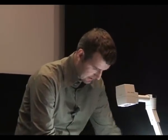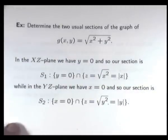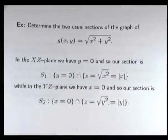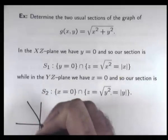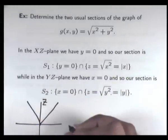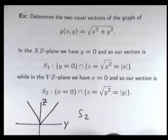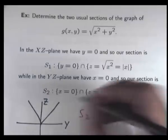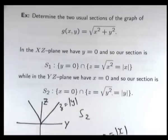Another example: determine the two usual sections of the graph of function G. Setting Y equals 0 and X equals 0, we get sections S1 and S2. In this case, the sections come out as Z equals the absolute value of Y for S2, and Z equals the absolute value of X for S1 — these are V-shaped curves.